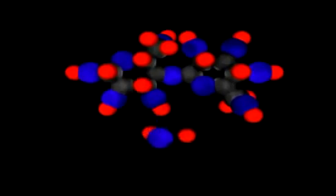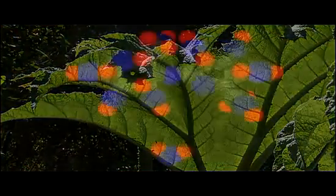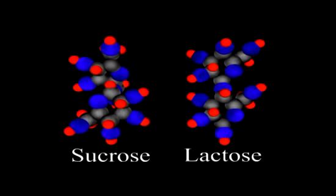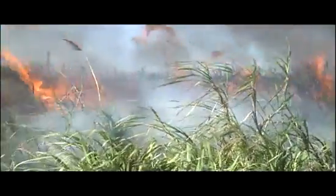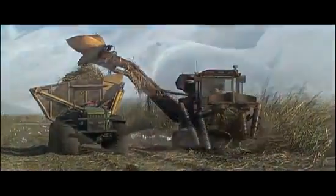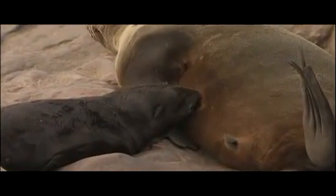Disaccharides are formed by linking two monosaccharides. Cells, especially those of plants, use disaccharides to store and/or transport energy. When an organism needs energy, disaccharides are broken apart into their monosaccharide subunits by hydrolysis. Sucrose and lactose are two common disaccharides. Each molecule of sucrose, or table sugar, has one glucose and one fructose molecule. Sugar cane and sugar beets produce and store huge amounts of sucrose and are harvested commercially to produce table sugar. Many female mammals produce lactose, or milk sugar, by adding a galactose molecule to a glucose molecule, to provide energy for their nursing offspring.